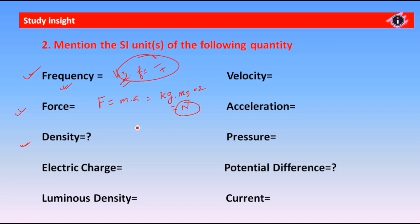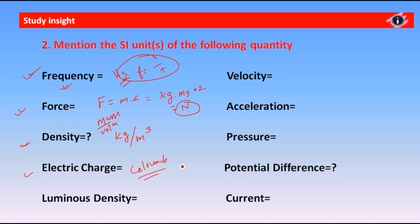Density means mass divided by volume. I will divide mass by volume. The unit of density is kg per meter cubed. The unit of electric charge is Coulomb. Coulomb is the name of the scientist.